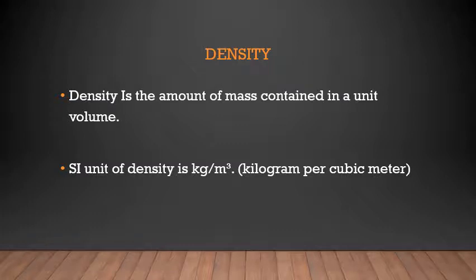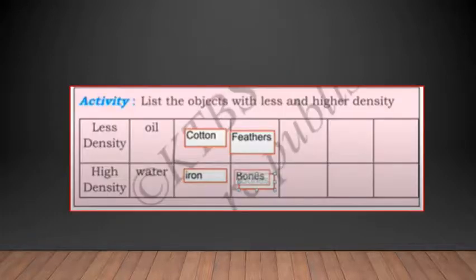So there is one activity given in page number 150. List the objects with lesser and higher density. So I have done two examples for you. Remaining, you can do it on your own. Less density, oil has less density, higher density, water. So the oil floats on water. Cotton has less density, iron has more density. Feathers have less density, the bones we have have the higher density.